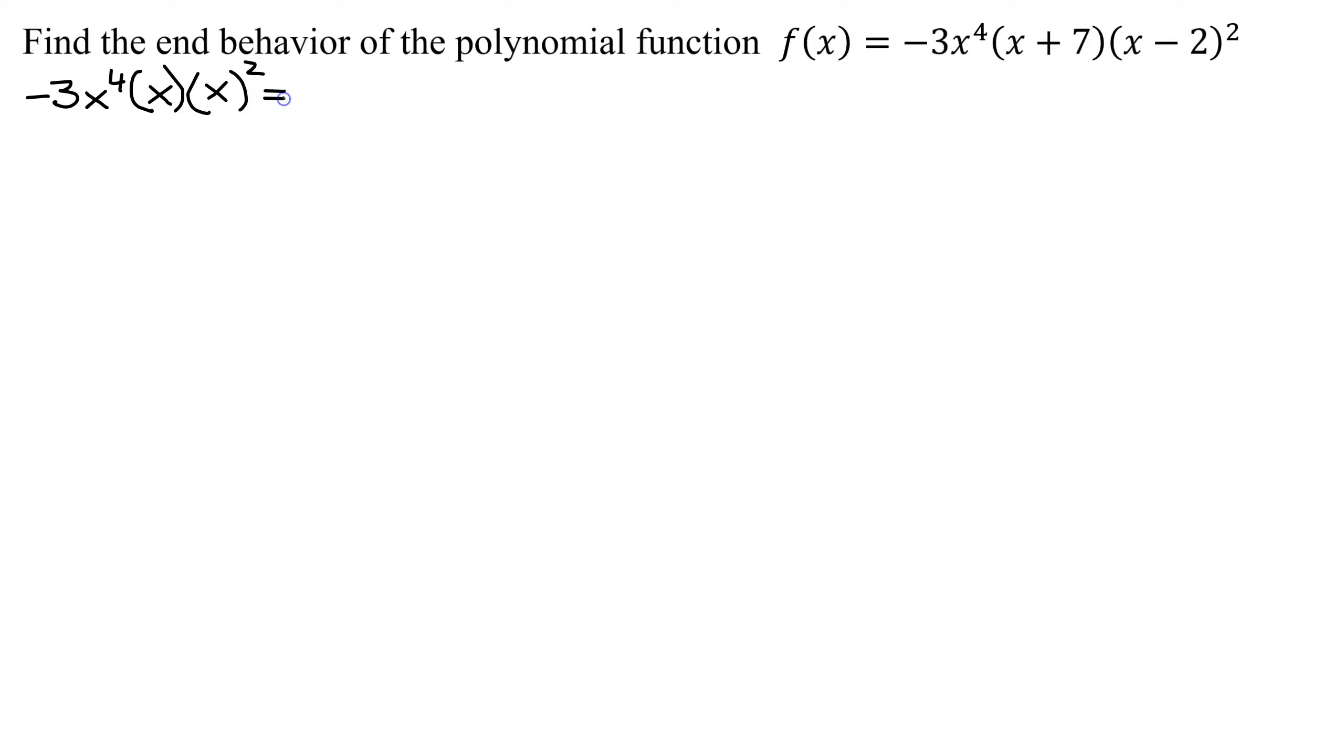Simplifying this expression, I get -3 times 1 times 1 is -3. For x, I have x^4 times x^1 times x^1, all squared, which is x^2.